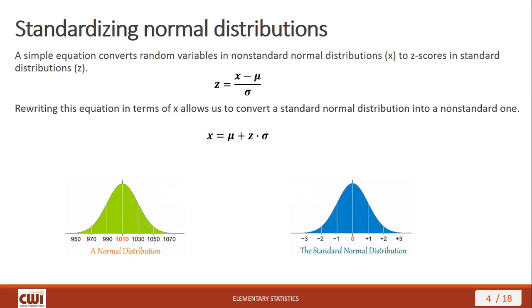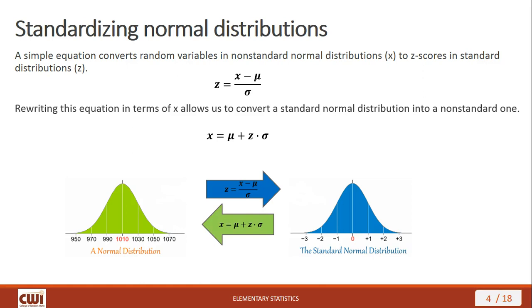When we solve for x, we get the equation: take the mean and add the product of the z-score and the standard deviation. This converts it back to the non-standard normal distribution. So we use the z-score equation to standardize a normal distribution, and then we use the same equation solved for x to de-standardize it.